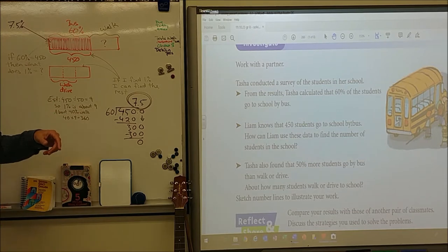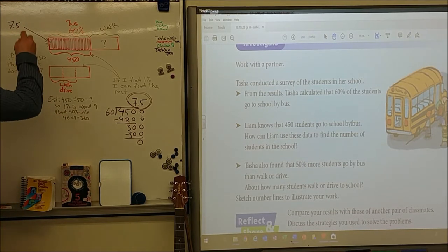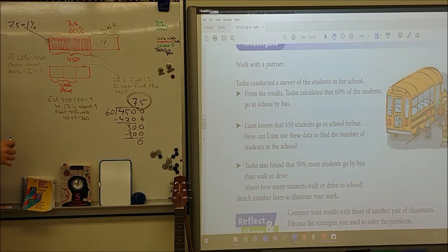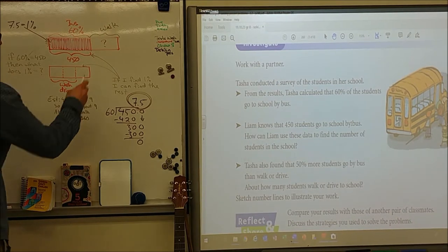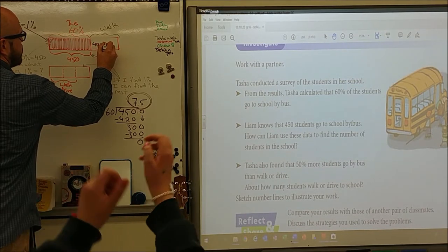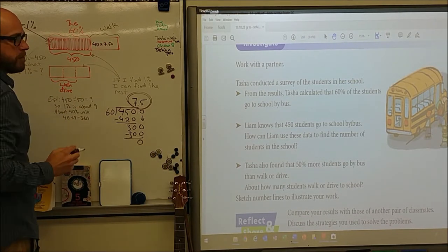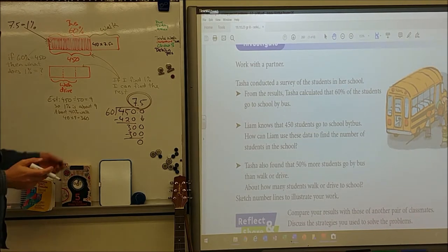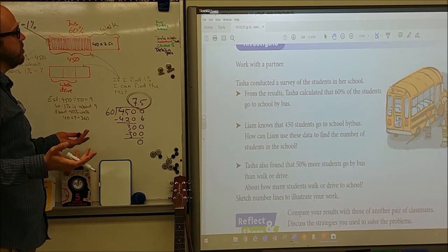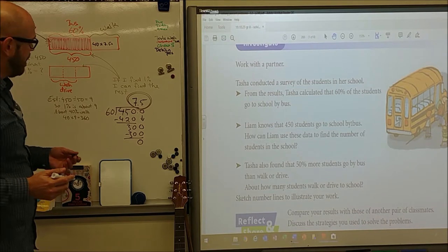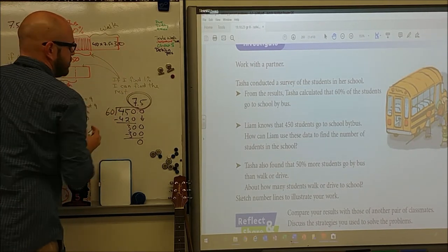So 7.5 kids equals 1%. Well, if 7.5 kids equals 1%, well, now this is easy. If this is 40%, I just have to do 40% times what's 1%? 7.5. Someone's got a calculator on me? Do you want to fire that up for me? Let's see. I know 4 times 7 equals 28, that'd be 280, and then the 0.5, so what is it? 300 on the button? 300. All right. Equals 300.